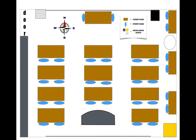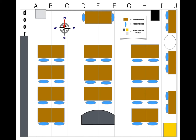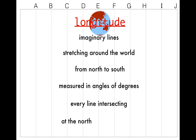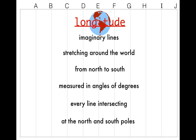Next, we'll be taking a look at lines of longitude. The difference between lines of latitude and lines of longitude is that lines of longitude actually run from north to south, as indicated by the letters at the top of the picture. Longitude can be defined as imaginary lines stretching around the world from north to south, measured in angles of degrees, with every line intersecting at the north and south pole. The most famous line of longitude is known as the prime meridian, which stretches all the way around the world from the north pole to the south pole.